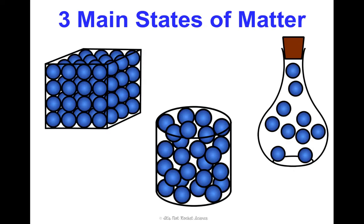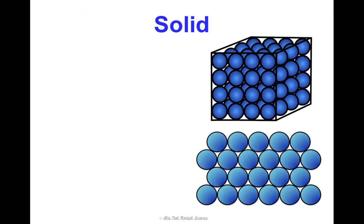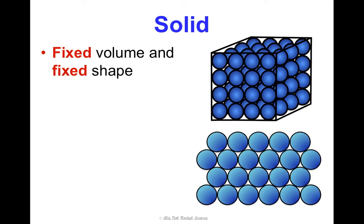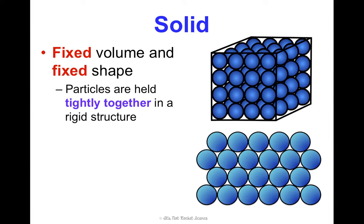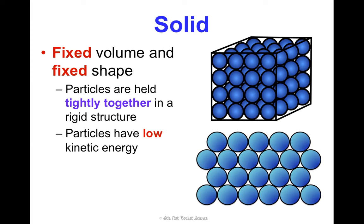There are three main states of matter we're going to talk about first, and then two lesser-known ones. So the big three: solids, liquids, and gases. A solid has a fixed volume and a fixed shape — the shape and volume of a solid isn't changing. Particles are held very tightly together in a very rigid structure. Notice how organized the particles are in this structure. They have very low kinetic energy because they exist at lower temperatures.